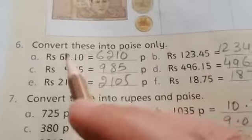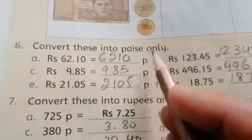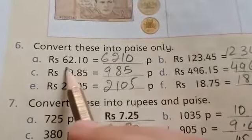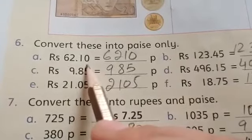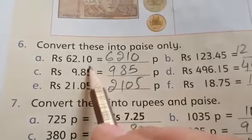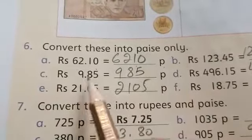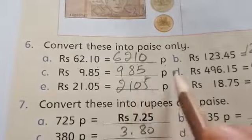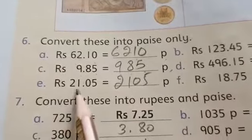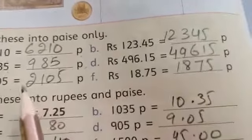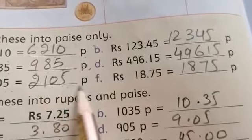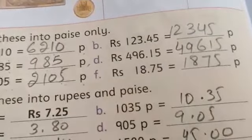Question number 6. Convert these into paisa only. Rupees 62.10. It means if we will write in paisa, it is 6,210 paisa. Rupees 9.85 means 985 paisa. Rupees 21.05 is 2,105 paisa. Complete the rest of the part.